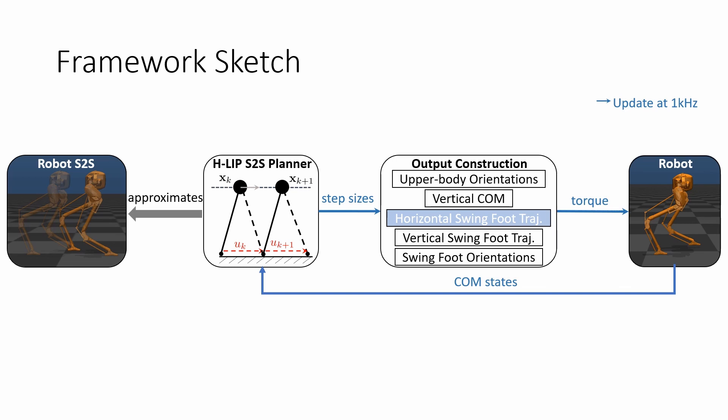The current center of mass states of the robot is sent to the reduced-order model planner, which generates the desirable placement to realize on the robot through proper continuous output construction and low-level tracking.